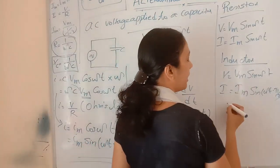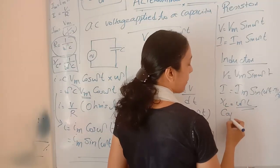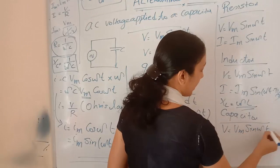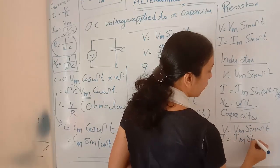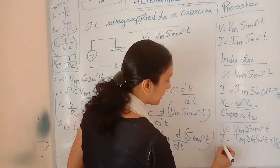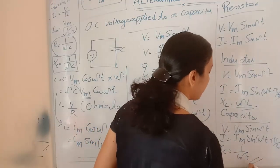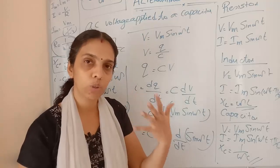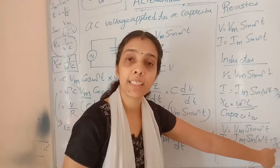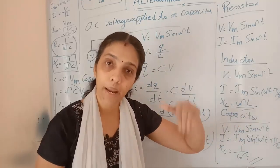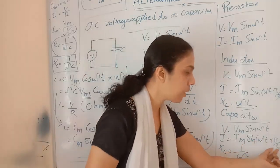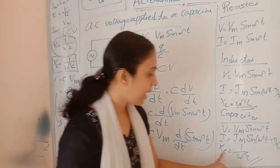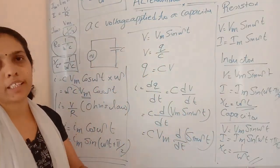If V equals Vm sin(ωt), the current is I equals Im sin(ωt + π/2), and Xc equals 1/(ωC). Comparing voltage and current, they are out of phase — the current is leading the voltage by a factor of π/2. So the current leads the voltage by π/2. Xc equals 1/(ωC) is an important equation.